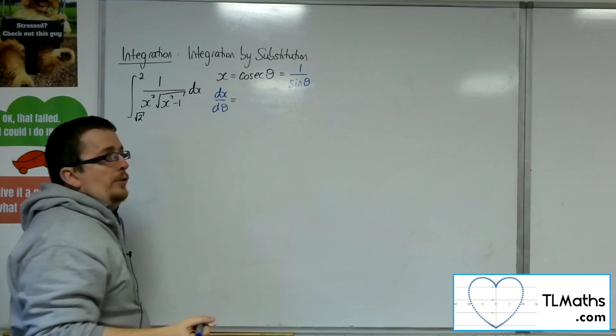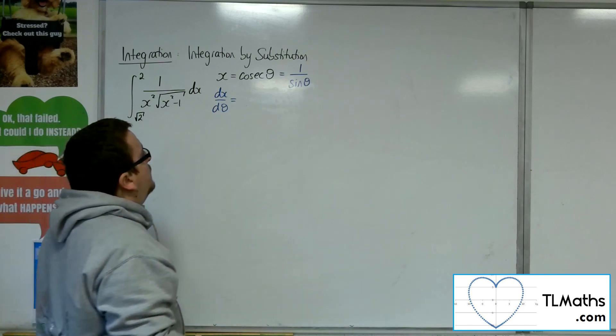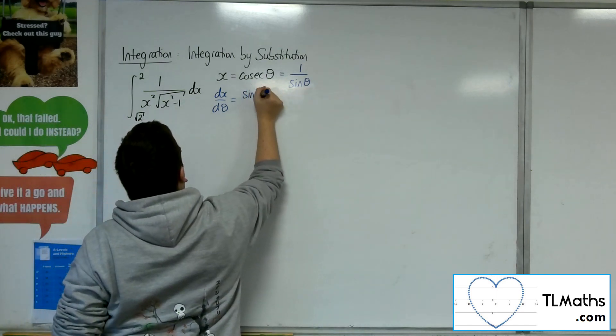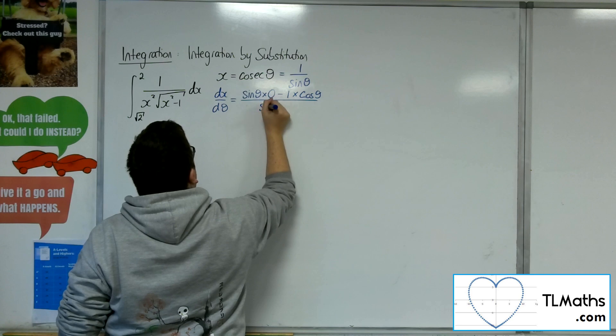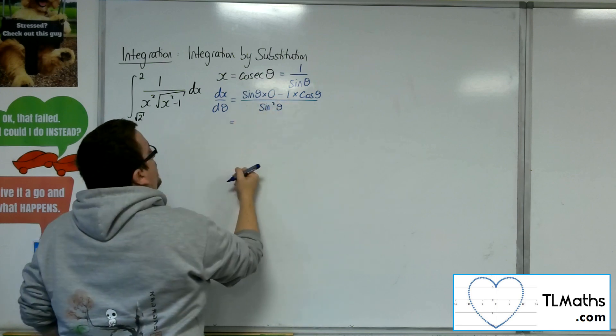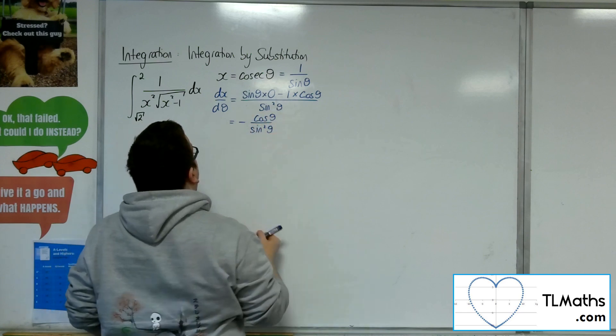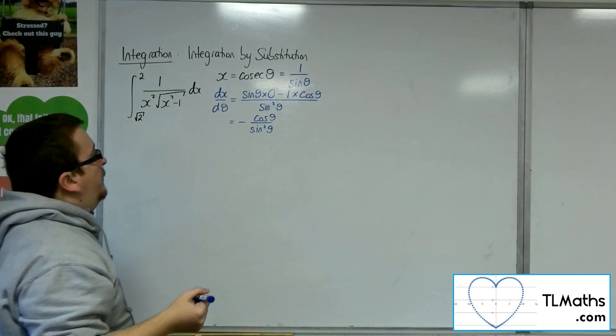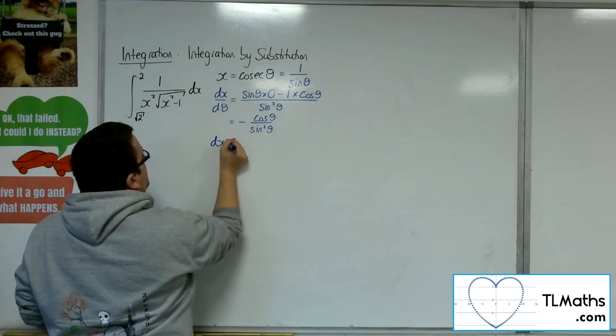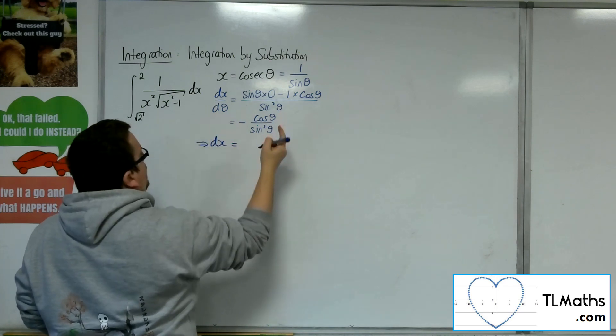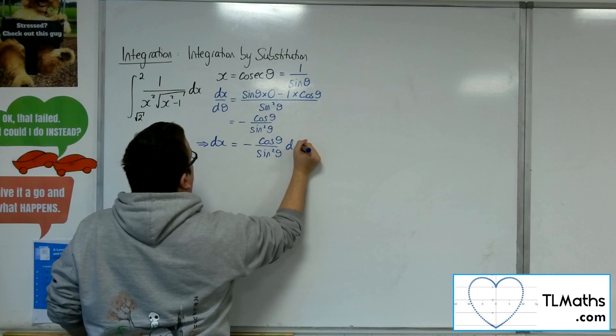Because it's a fraction, I'm going to use quotient rule because that's what most likely people would use. So we've got the bottom times by the derivative of the top, take away the top times the derivative of the bottom over the bottom squared. So simplifying that, we have minus cosine of theta over sine squared theta. So if I wanted to rearrange this to get dx equals, then dx, just multiplying both sides by d theta, will be minus cosine theta over sine squared theta d theta.